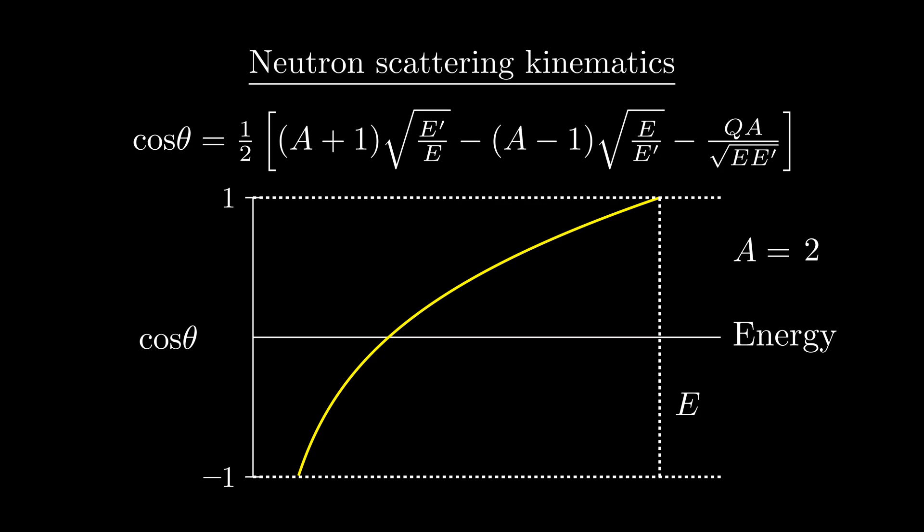Now, we'll derive an expression for this lowest possible energy in just a second, but for now, let's just say it's equal to some factor alpha times our incident energy. If we keep increasing the mass of the target, alpha E gets closer and closer to our incident energy, meaning that the neutron is able to transfer less and less energy through a scattering event.